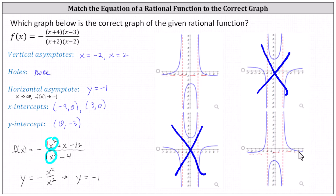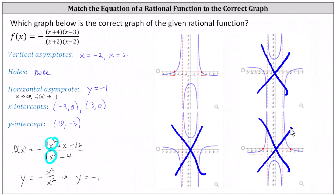Now let's look at the x-intercepts, which should be negative four comma zero and three comma zero. For the first graph, we do have x-intercepts at negative four comma zero and three comma zero. But the last graph does not — its x-intercepts are negative three comma zero and four comma zero, which are not correct, so that graph is eliminated. This first graph also has a y-intercept of zero comma negative three. Therefore, this first graph is the correct graph for the given function.